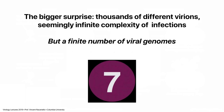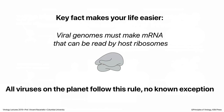These seven genome types come from the fact that all viruses need to make mRNA that can be read by host ribosomes, because no virus encodes a ribosome or a complete translational machinery. They must use the cell's translation machinery, so the mRNA has to be compatible with it. All viruses do this — we know no exceptions — and that allows us to reduce all viruses to seven different categories.